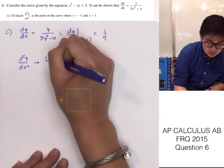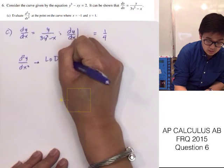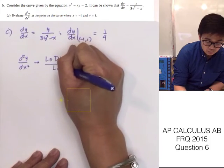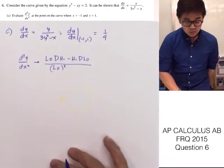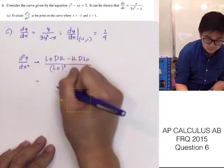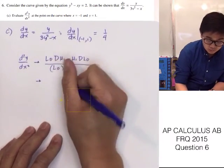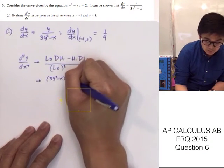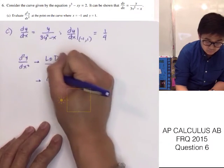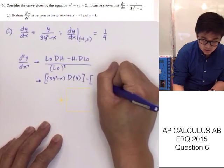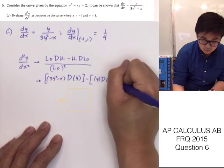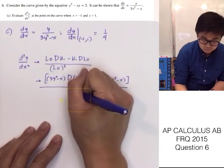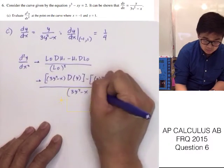For part c, the second derivative will be found using the quotient rule: low d-high minus high d-low, all over low squared. To find the second derivative, the low term is 3y squared minus x, times the derivative of the high term y, minus the high term y, times the derivative of the low term 3y squared minus x, all over 3y squared minus x squared.